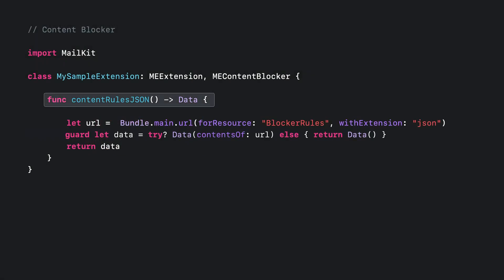Once your rule list is complete, you can provide it to Mail by returning it in the content rules.json method. This method expects a data encoding of the content rule list .json. And that's it for Mail content blockers.